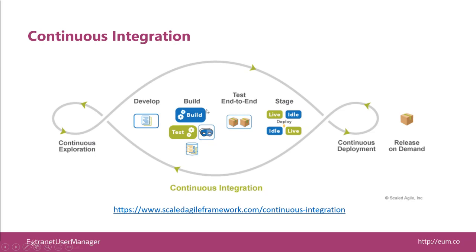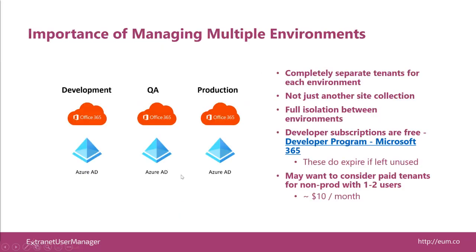A big premise of this is that you've got more than just your production environment to work on. We're big proponents of having completely separate tenants for your different environments — your development work has its own Microsoft 365 subscription with its own Azure AD, completely separated from production. You may have additional environments; we've had clients go as high as five or six. Maybe a development, QA, user acceptance testing, staging, pre-production, and production. That's overkill for most projects, but at a bare minimum, having development and production — and ideally a QA environment as a third — is best practice.